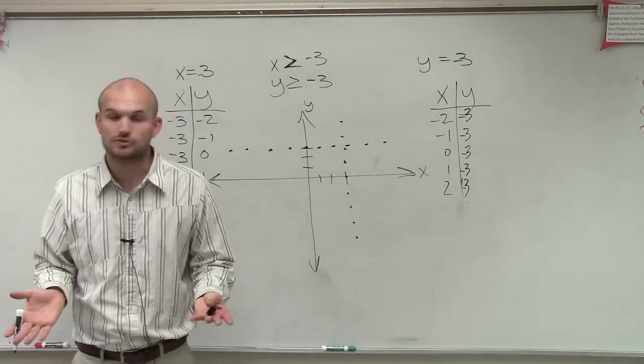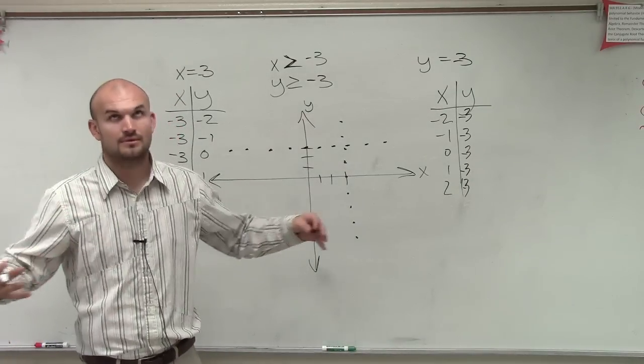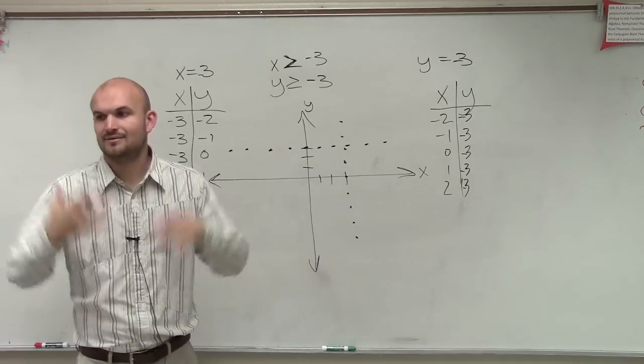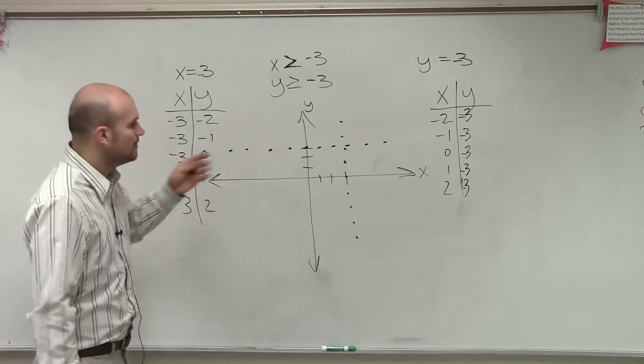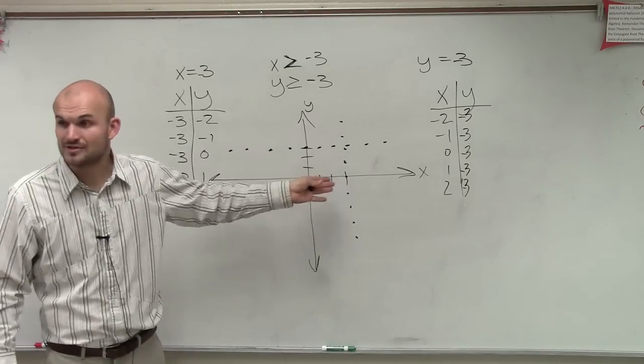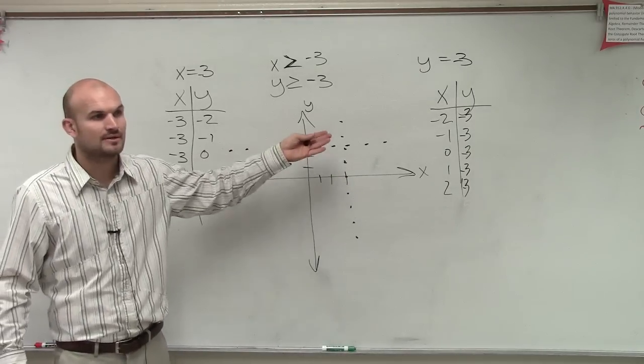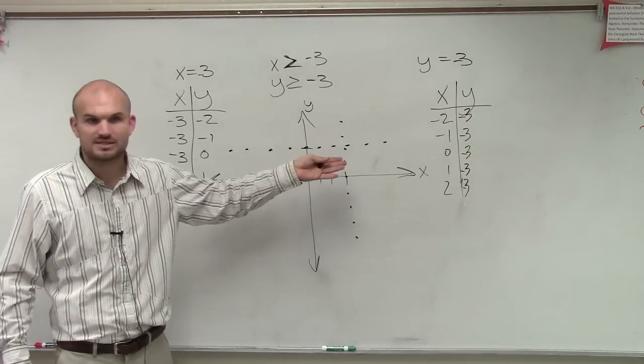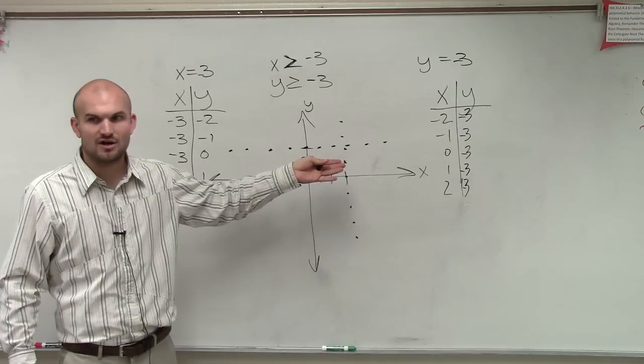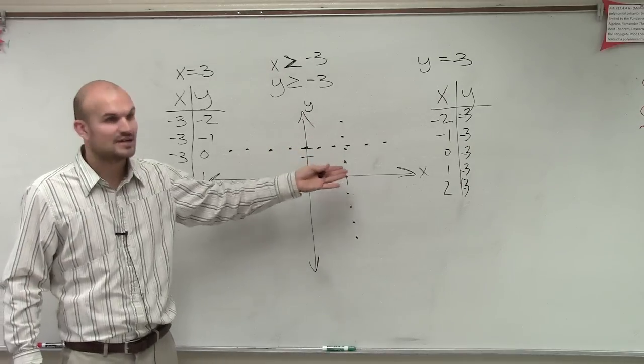And the only way to determine if it's true or false is to use a test point, right? Well, you can also test your boundary lines to see if it's going to be true or false. And if it's true, it's solid. And if it's false, it's dashed, right? Good, very good.